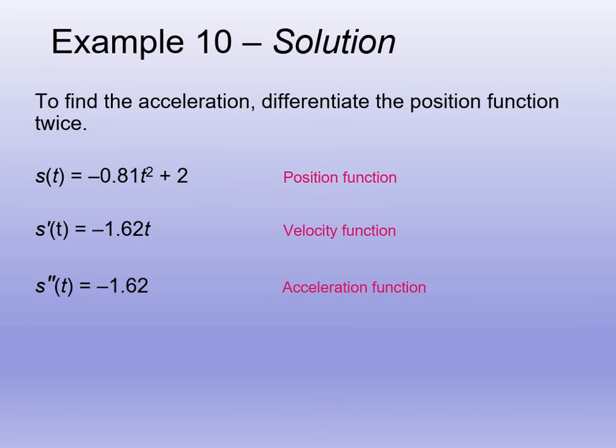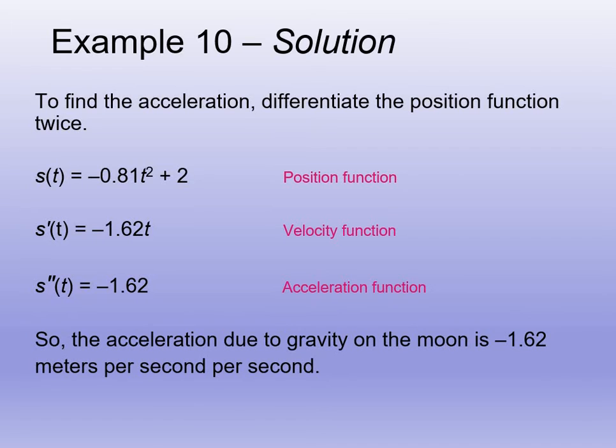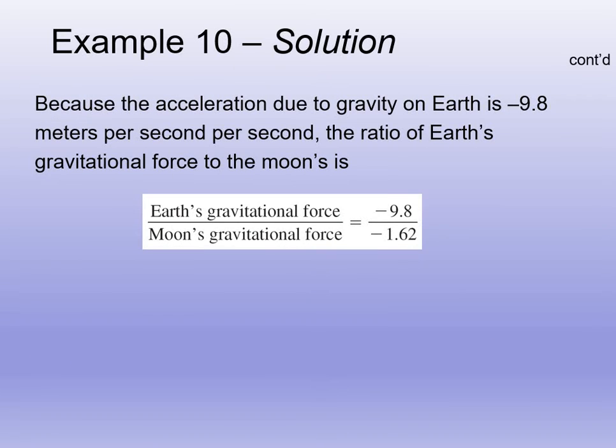So we can answer the question now. The acceleration due to gravity on the moon is negative 1.62 meters per second per second or meters per second squared. So that's acceleration due to gravity on the moon.